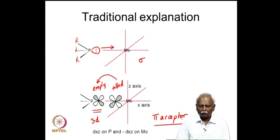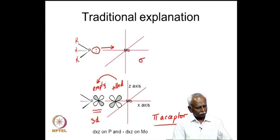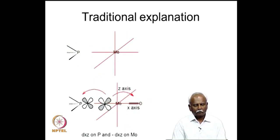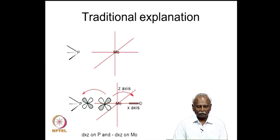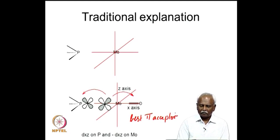People thought that phosphorous ligands are good pi acceptors because of electron density flowing from the metal d orbital into the empty d orbital on the phosphorous. Carbon monoxide is one of the best pi acceptors known, so it is natural that carbon monoxide would like to have a poor pi acceptor in the trans position.